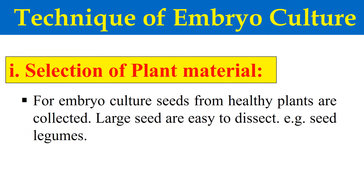Now the technique of embryo culture — the different steps involved. The first step is selection of plant material, meaning we select seeds from healthy plants. Generally we take large seeds because they are easy to dissect. These steps are common for both mature embryo culture and immature embryo culture or embryo rescue technique.